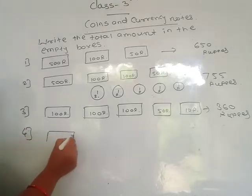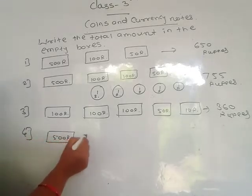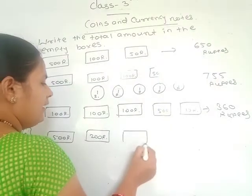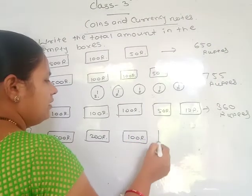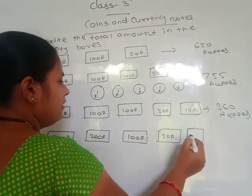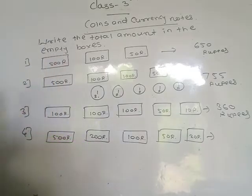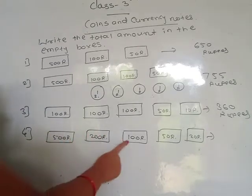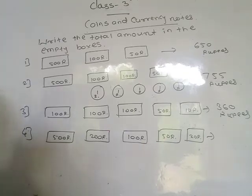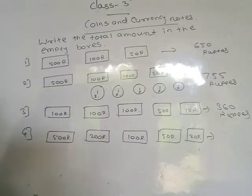Then the next one: here one 500 rupees note, one 200 rupees note, then again one 100 rupees note, then one 50 rupees note, then one 20 rupees note. Count: 500 plus 100 plus 100 is 800, plus 50 is 850, plus 20 means 870 rupees.